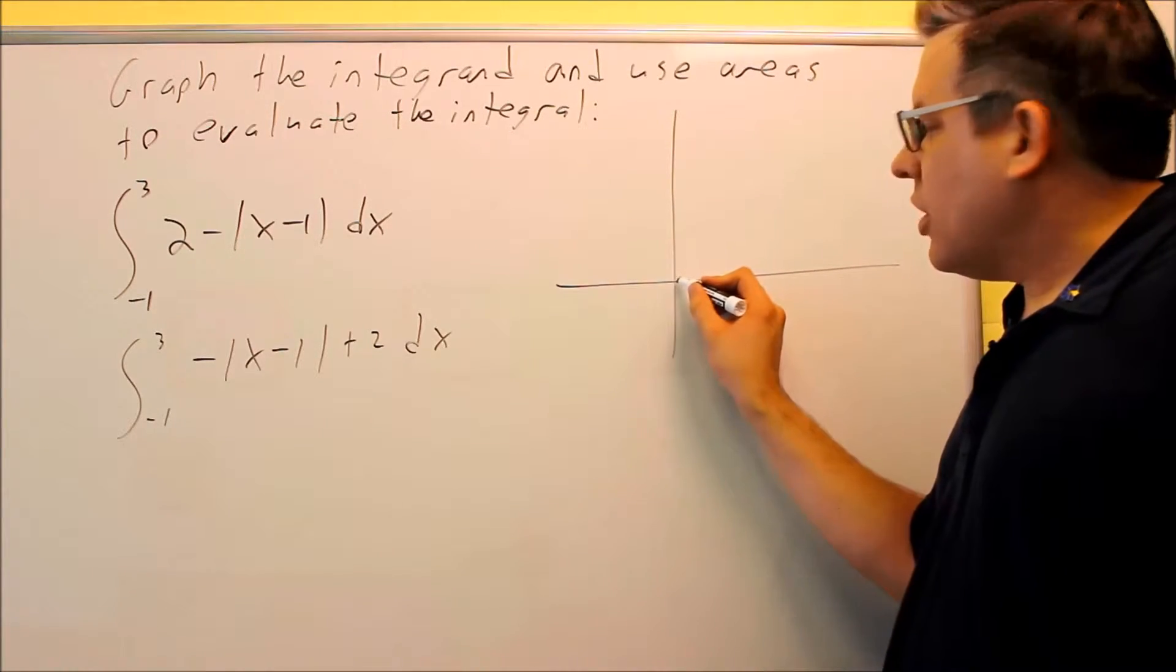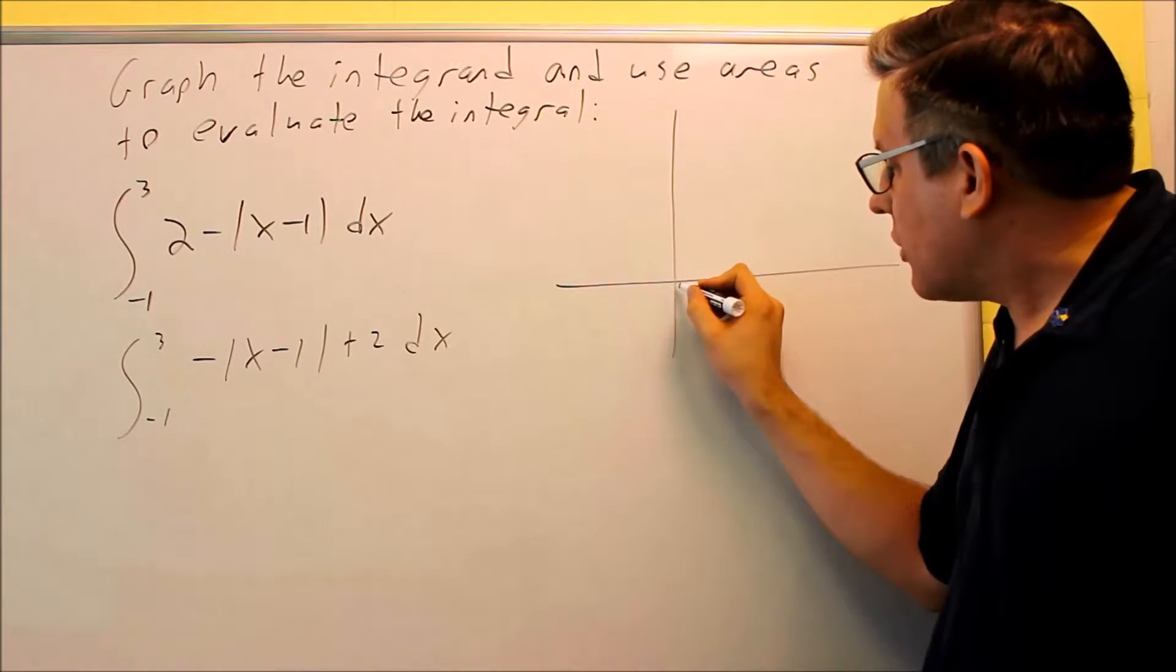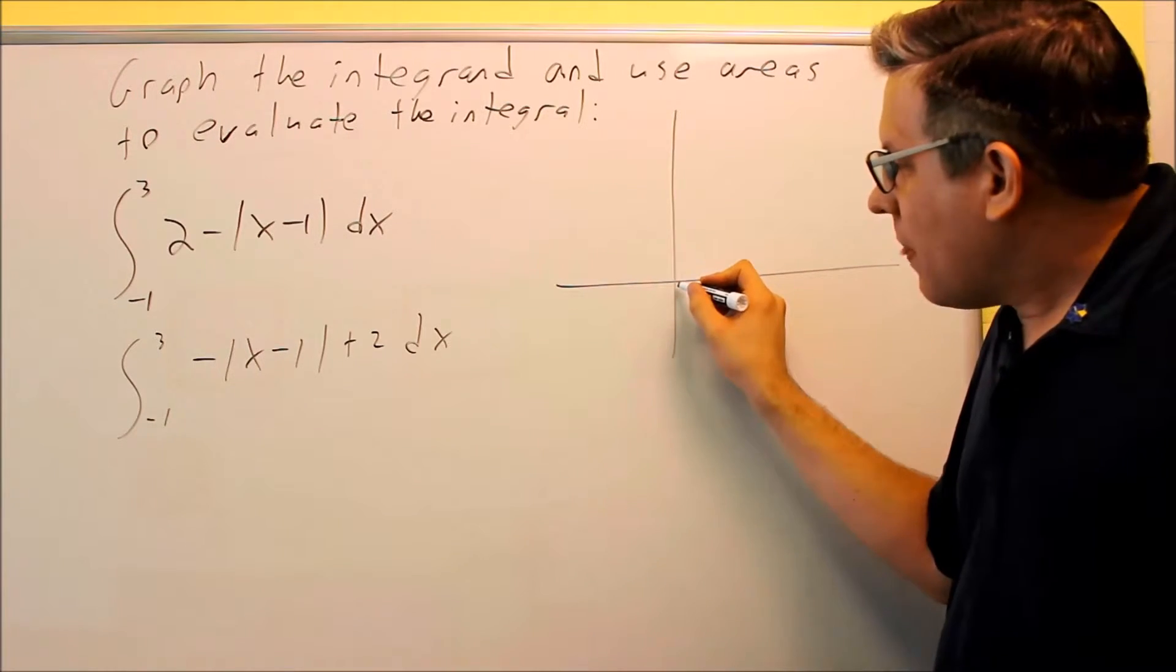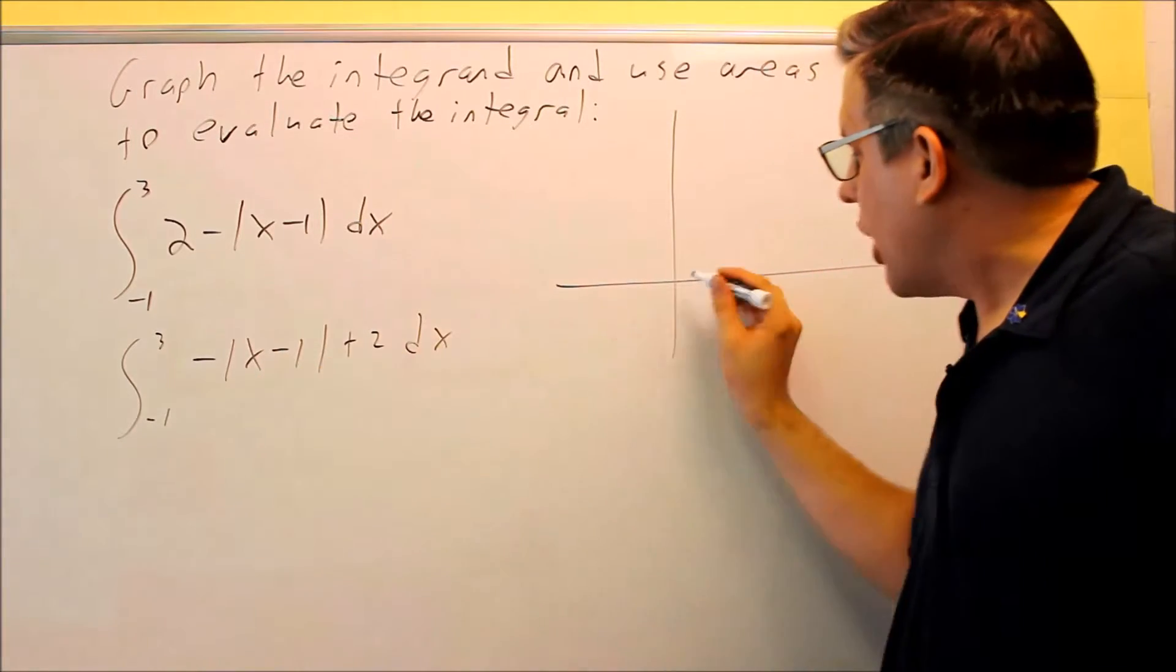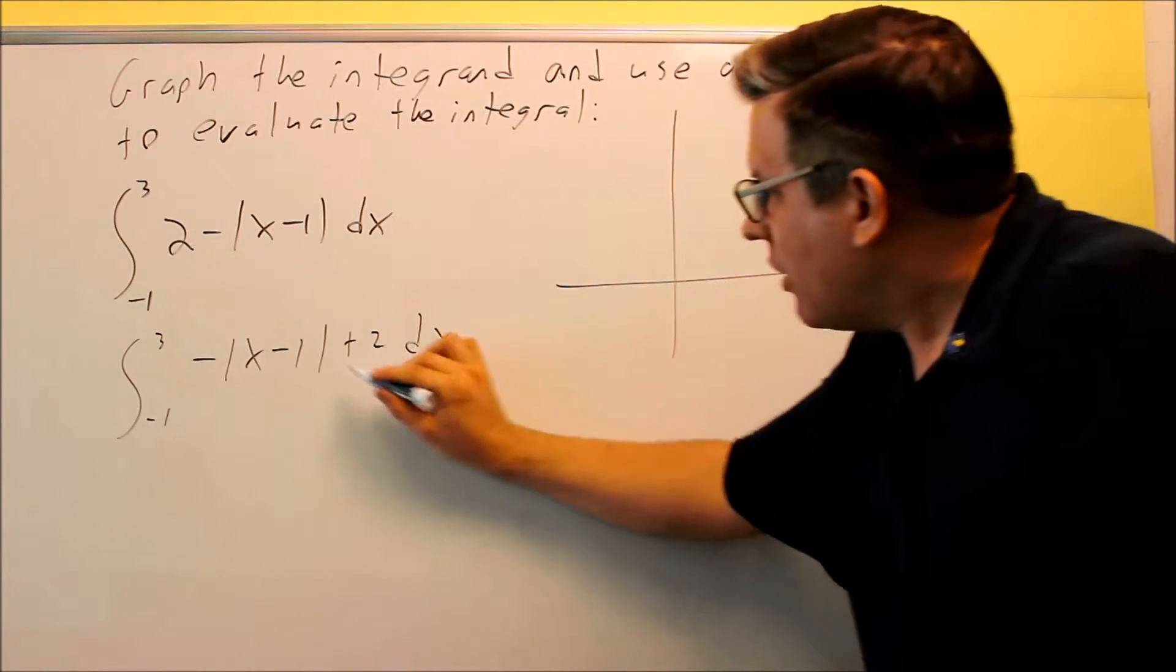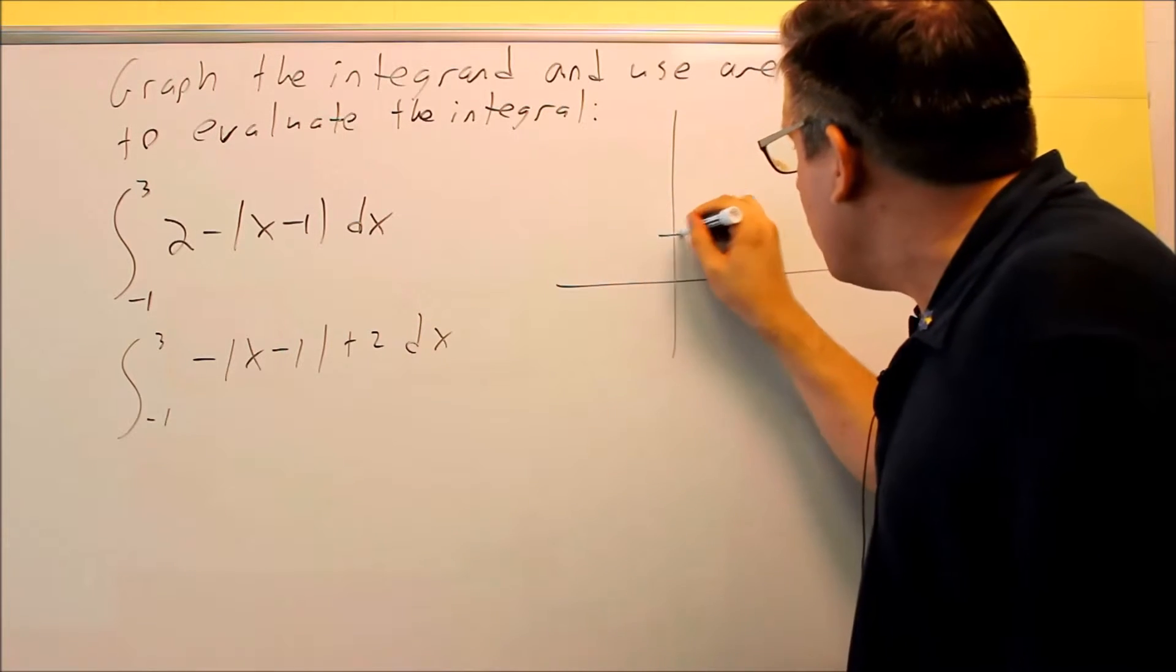So normally, the absolute value graphs that look like these, they normally start at 0, 0. And we're going to move it. Because there's a minus 1, we've got to move it 1 to the right, and then same sign as this, we're going to move it up 2 units.